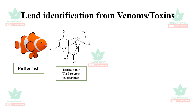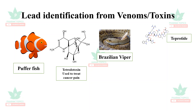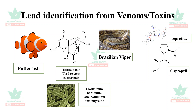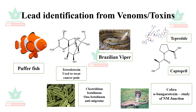Tetrodotoxin, used to treat cancer pain, is a lead molecule obtained from puffer fish. From the Brazilian viper, the lead molecule teprotide was obtained, from which the famous drug captopril was derived. Onabotulinumtoxin A, used as an anti-migraine agent, was obtained from the microbe Clostridium botulinum. From cobra venom, alpha-bungarotoxin was obtained as a lead molecule used to study neuromuscular junction function.